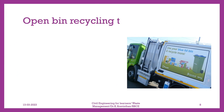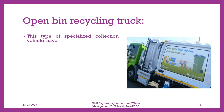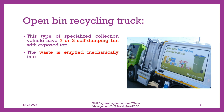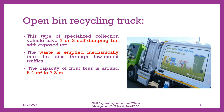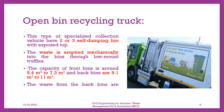Open Bin Recycling Truck. This type of specialized collection vehicle has two or three self-dumping bins with an exposed top. The waste is emptied mechanically into the bins through low-mount chutes. The capacity of front bins is around 5.4 to 7.3 cubic meters and back bins are 9.1 to 11 cubic meters. The waste from the back bins is discharged from the rear side of the vehicle.